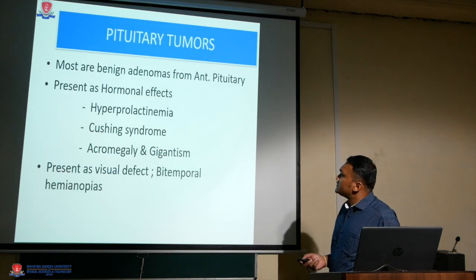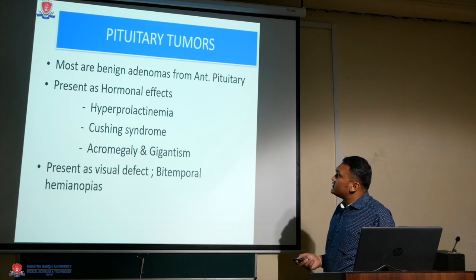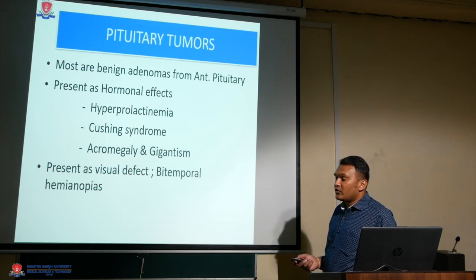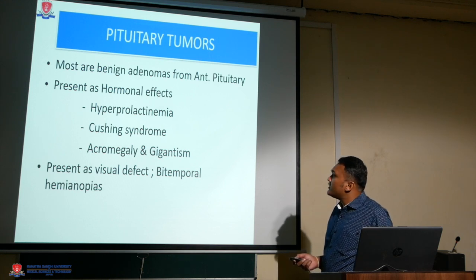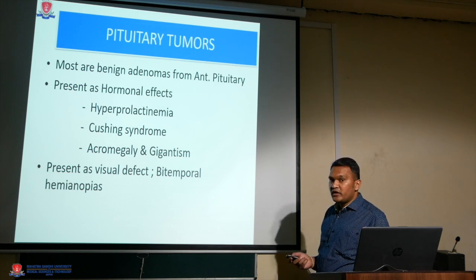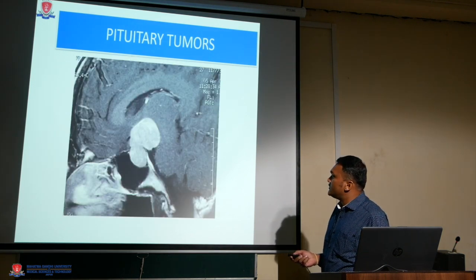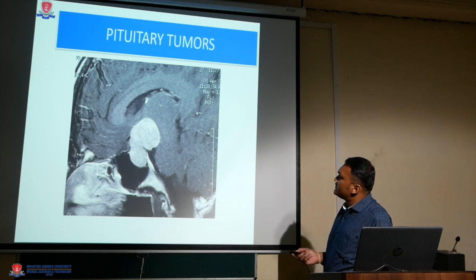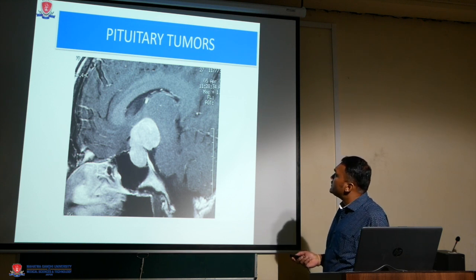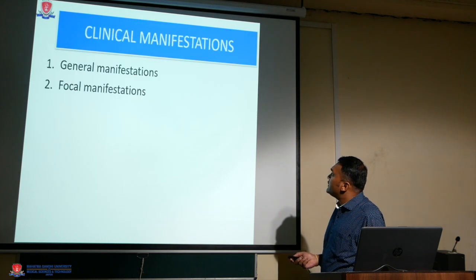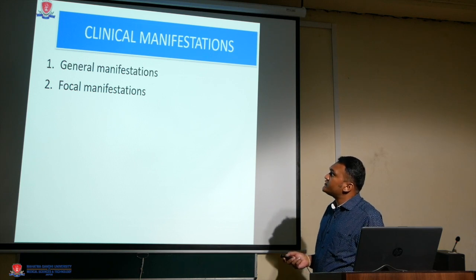Pituitary tumors are most commonly benign adenomas from the anterior pituitary. They present with hormonal effects causing hyperprolactinemia, Cushing syndrome, acromegaly, and gigantism. They often present with a visual defect — temporal hemianopia. This is an example of a pituitary tumor: the hyperintense area in the sellar region is an example of a pituitary adenoma.